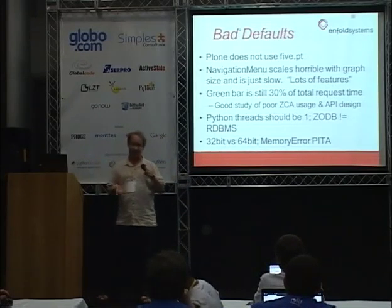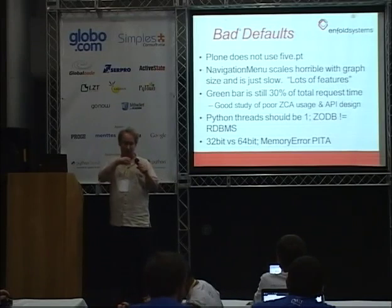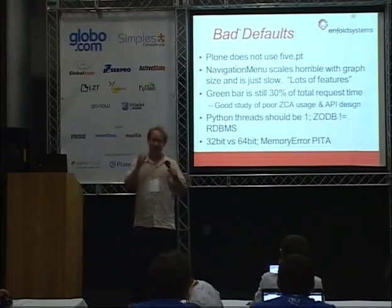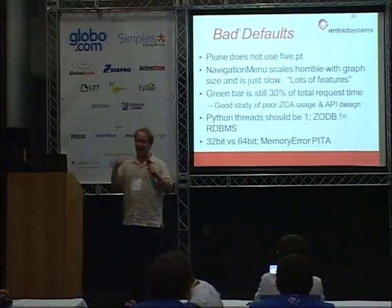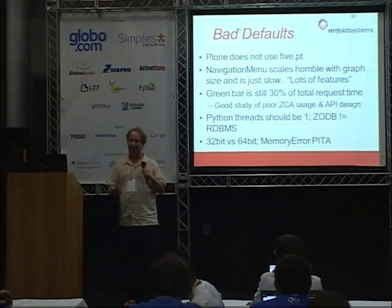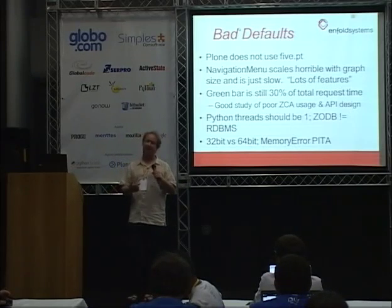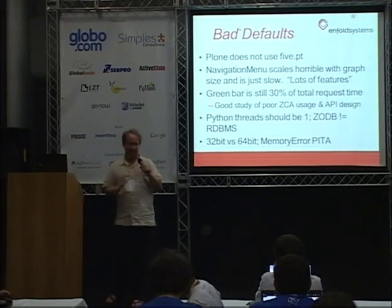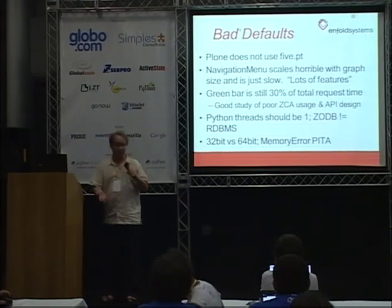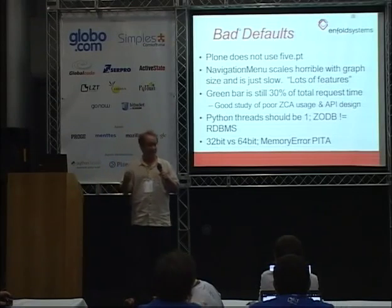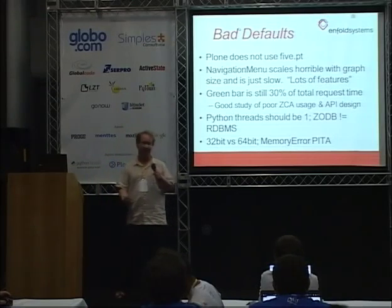The green bar is ripe for optimization. If you want to look at how not to do things, the green bar in Plone is exactly how not to do anything. It supports a poor usage of the component architecture and a terrible usage of API design — just punting on the design and letting the component architecture do it. That's an absolutely terrible idea. It's certainly not how you scale.